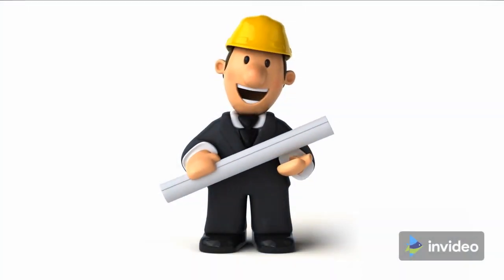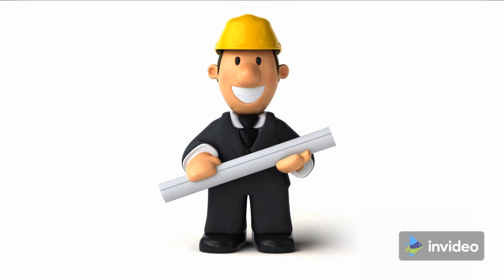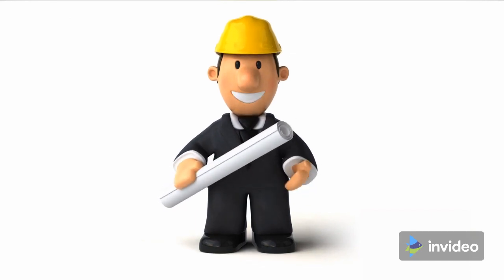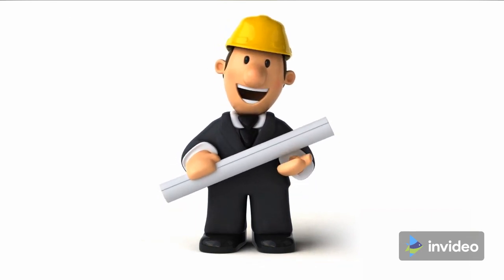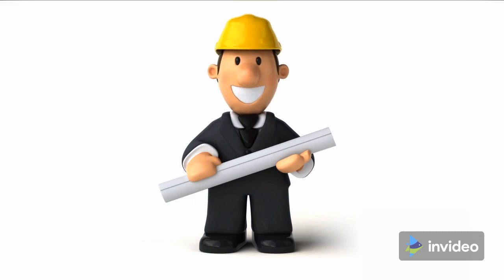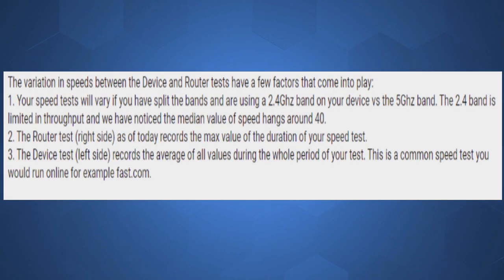Engineers sometimes forget that not everyone is an engineer and set things up a certain way because everyone understands this — but they don't. The actual response said the router test, right side, records the maximum value of the duration of your speed test. The device test, left side, records the average of all values during the whole period of your test. This is a common speed test you would run online, for example fast.com.